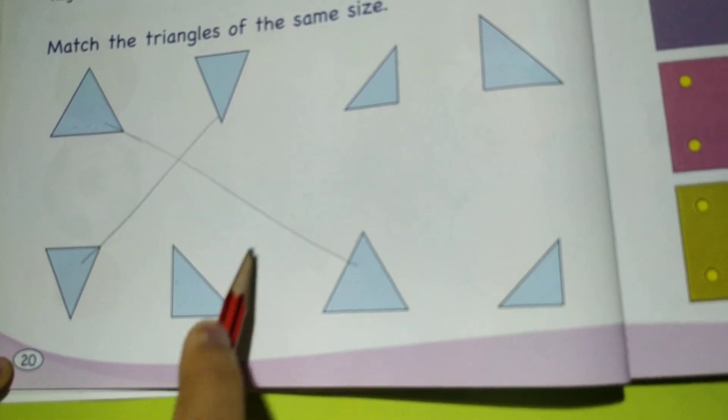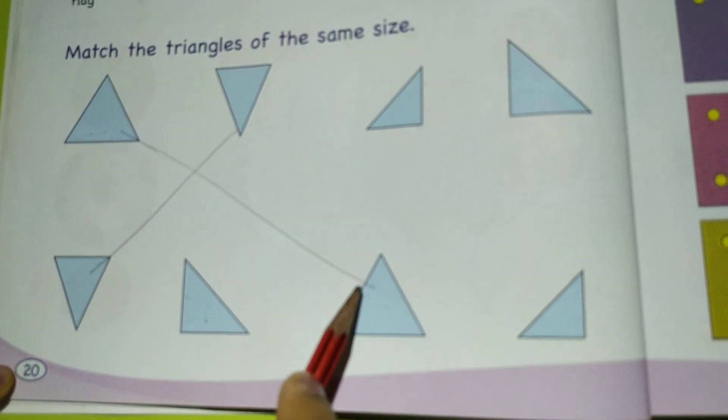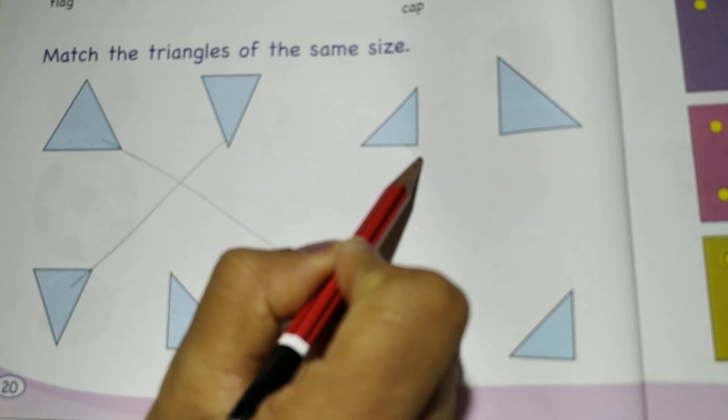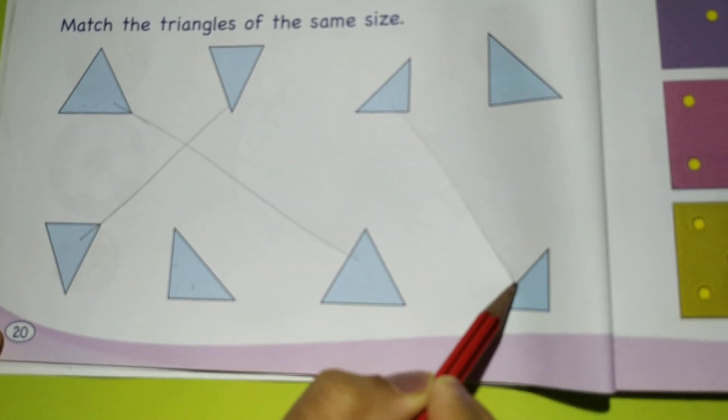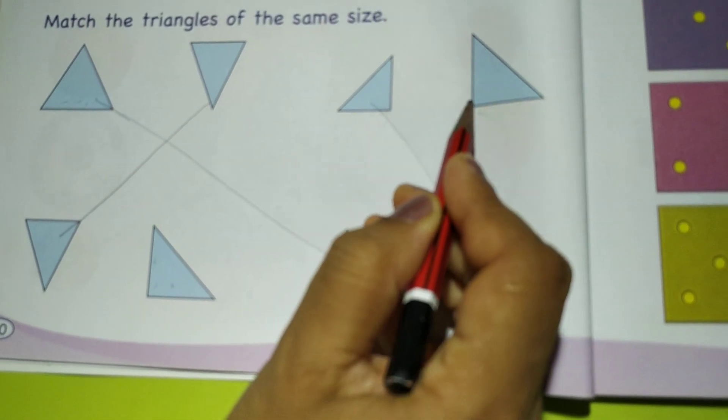This is already done, so this third one goes with the last one below. Now the last one is left and this is left, so this goes. They are of the same size, triangles of the same size.